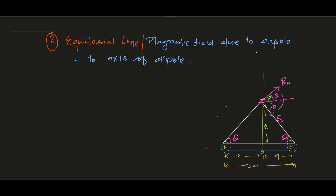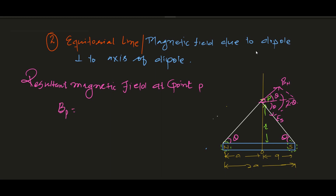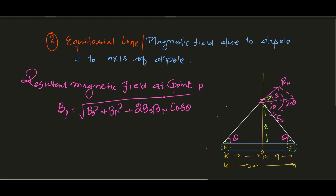Let this angle be theta. This angle is also theta. Now I draw the axis and the corresponding angle theta on both sides. So the total angle between the two vectors BS and BN is 2 theta. Now you can apply the parallelogram law. The resultant magnetic field at point P — the net field at point P — is obtained using the parallelogram law: BS² + BN² + 2·BS·BN·cos(2θ).